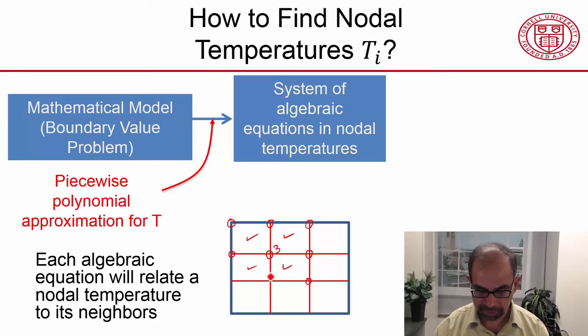Then you have these nodes coming in and these nodes, which means that the algebraic equation at this node will relate T3 to these other values. This node is not connected to this element, so those nodes won't be involved in writing that relationship.